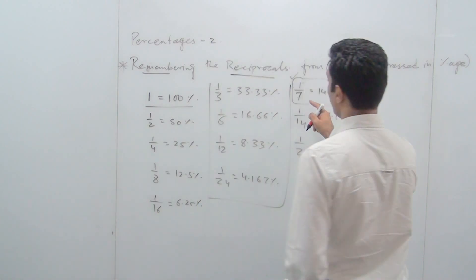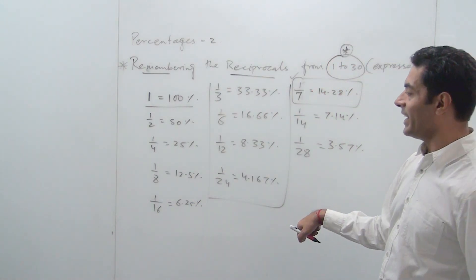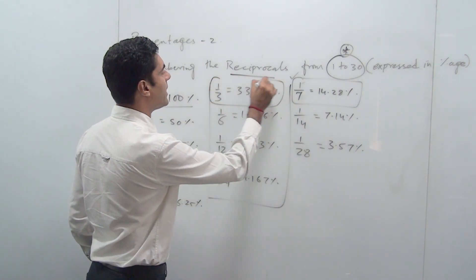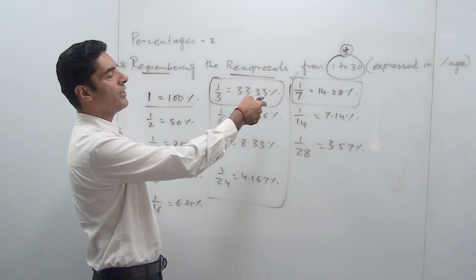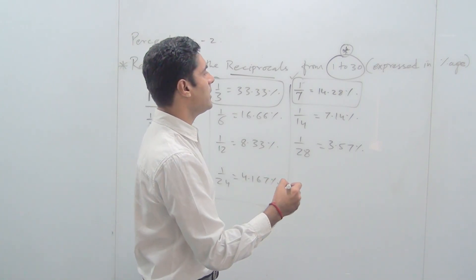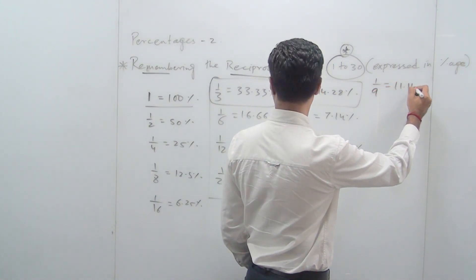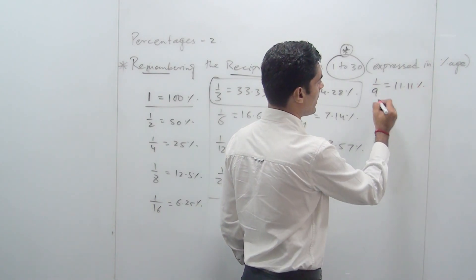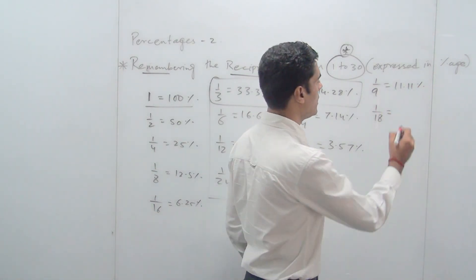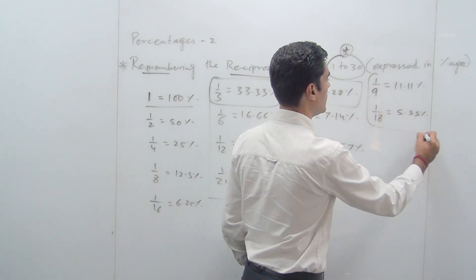1/8 we have already done, which is 12.5%. For 1/9, it will be one-third of 1/3. So if 1/3 is 33.33%, then 1/9 will be one-third of 33.33 which is 11.11%. So 1/9 equals 11.11%. And 1/18 will be half of 11.11 which is 5.55%.